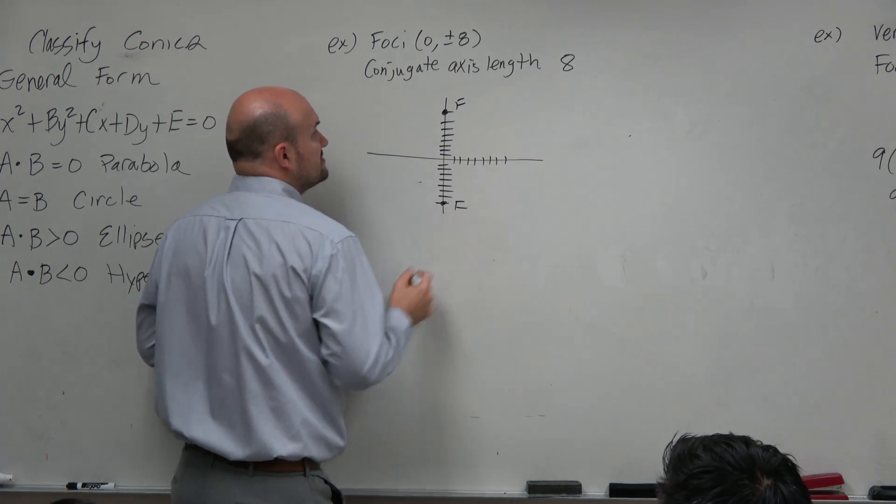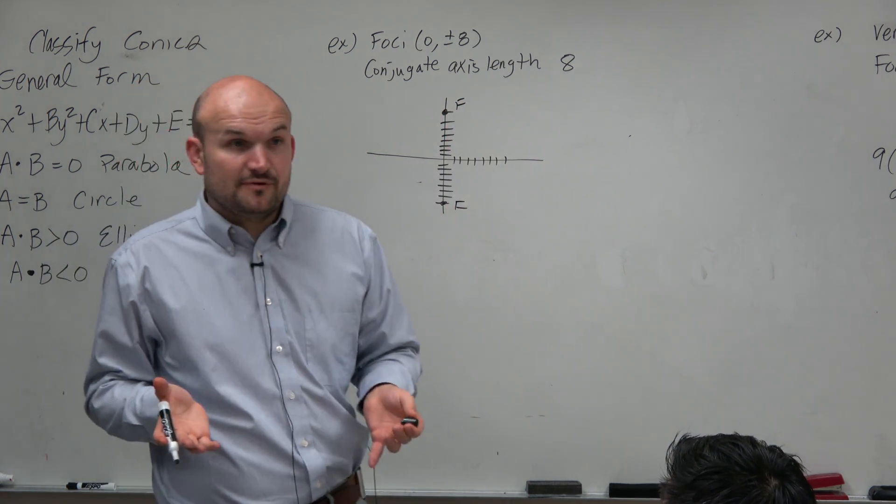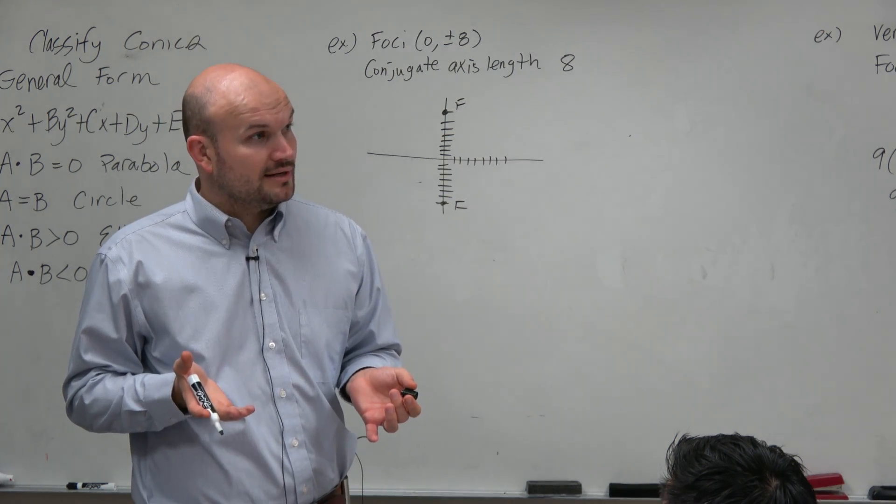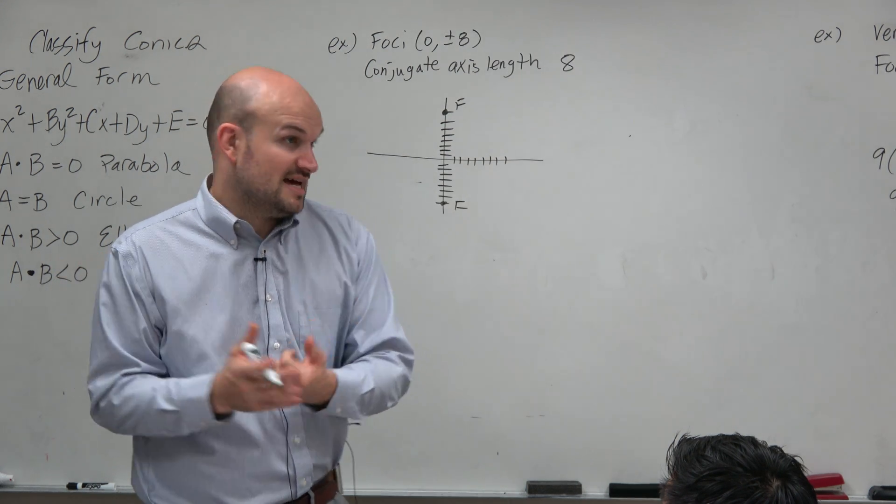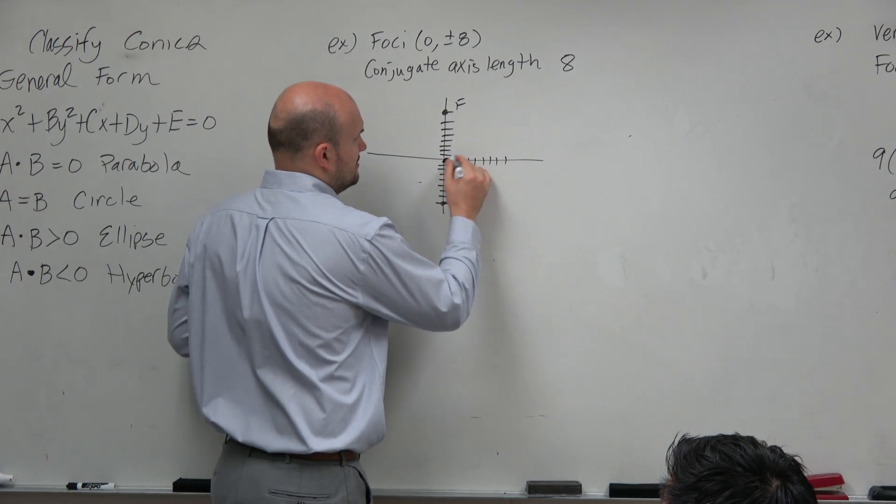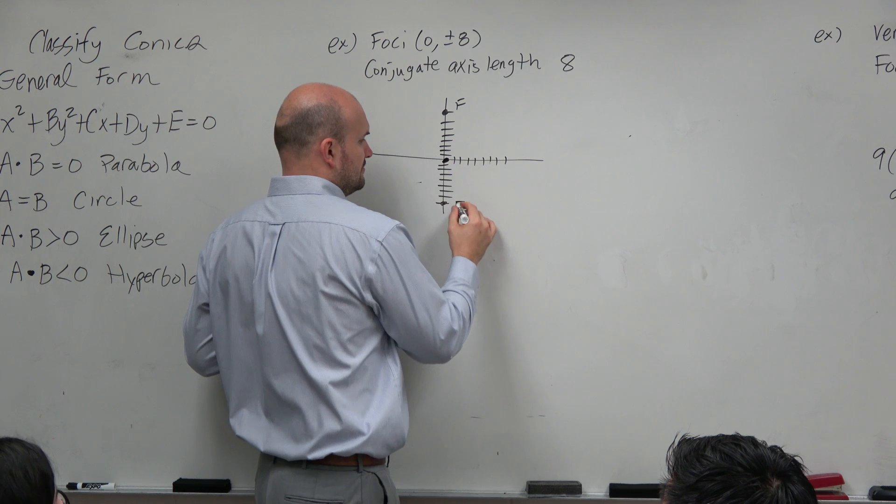Now, these are my two foci. Based on this information, there's a lot that I can draw. Because I know that the midpoint of the two foci is going to be the center, which has to be then at? (0, 0). (0, 0).